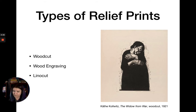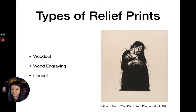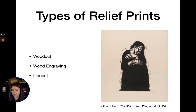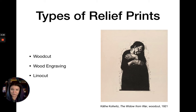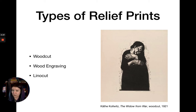Relief was the first broad print category, and we're going to look at three types: woodcut, wood engraving, and linocut. This isn't exhaustive—there are lots of kinds of printmaking—but these are the most common. An example of a woodcut shown here is by Käthe Kollwitz, a very famous German expressionist who is mostly known as a painter but also did printmaking.